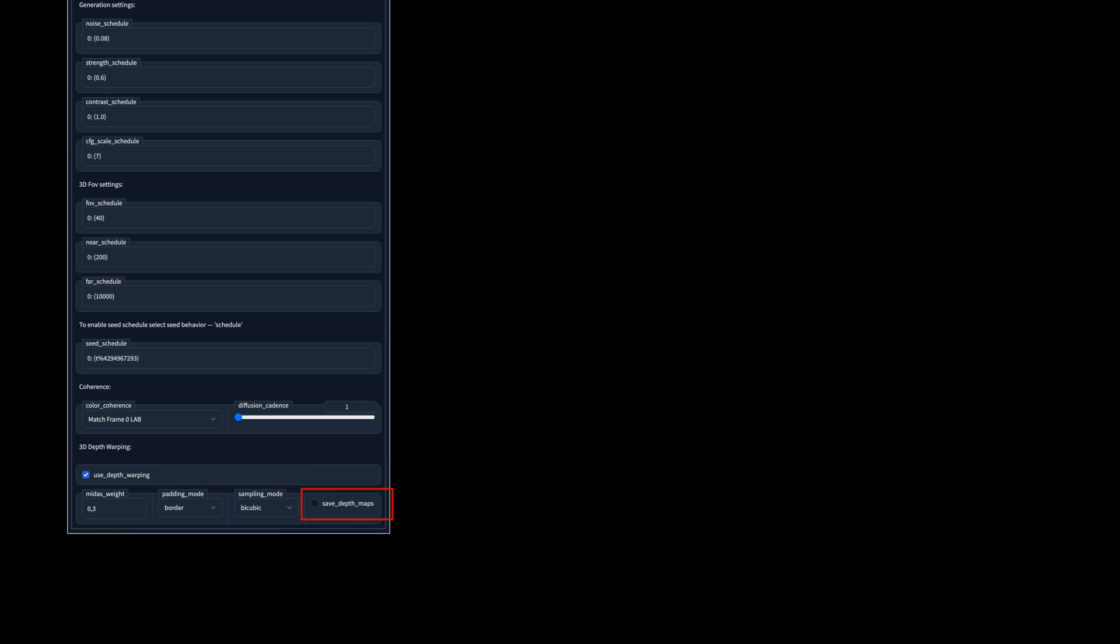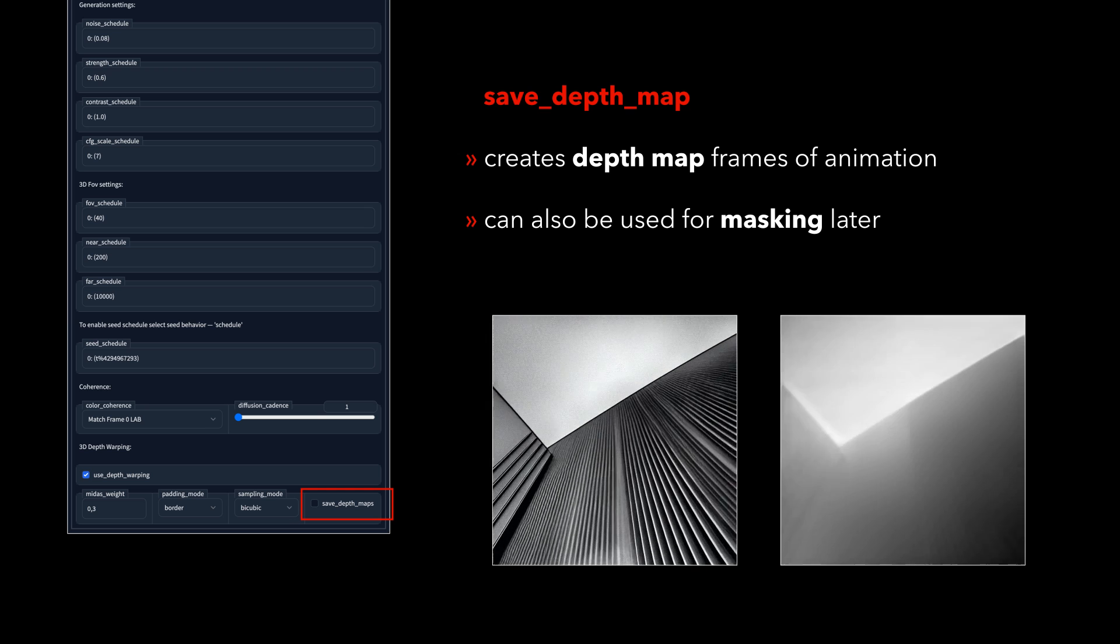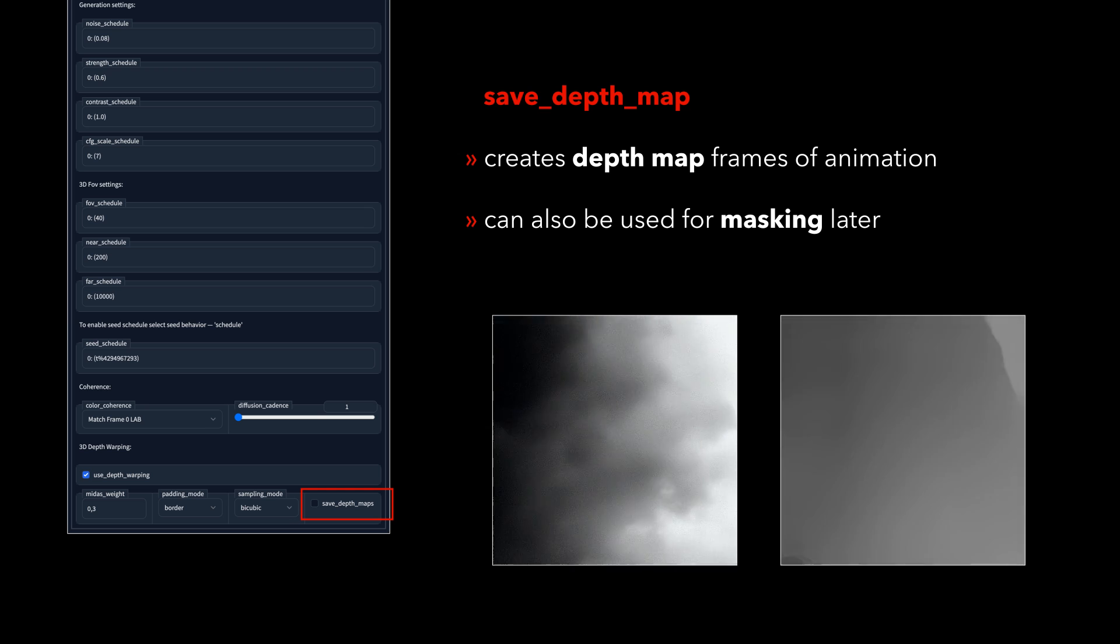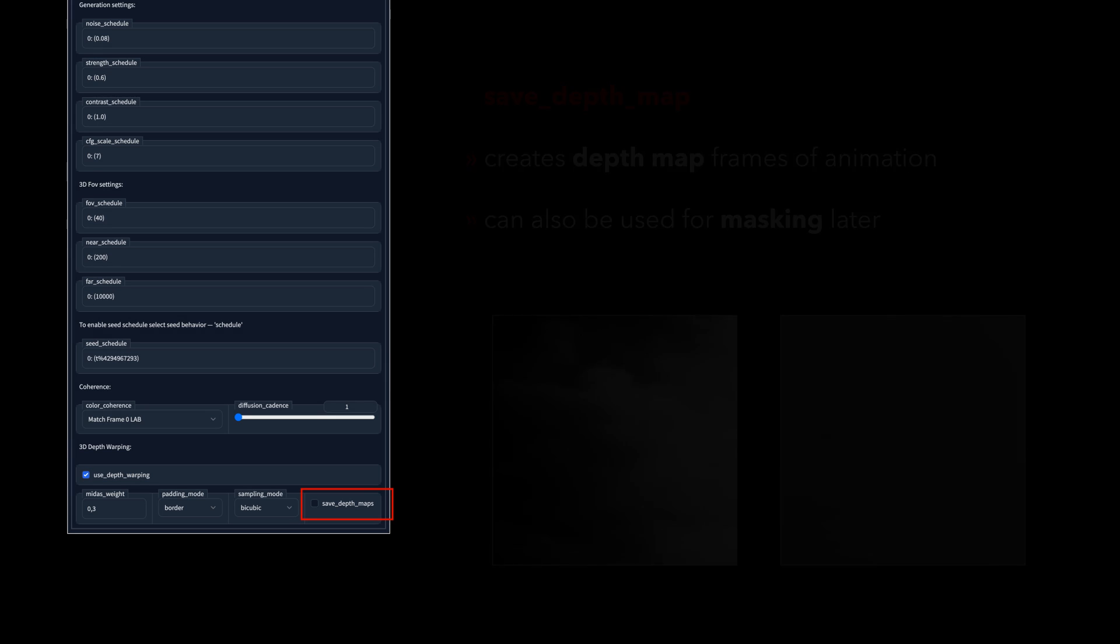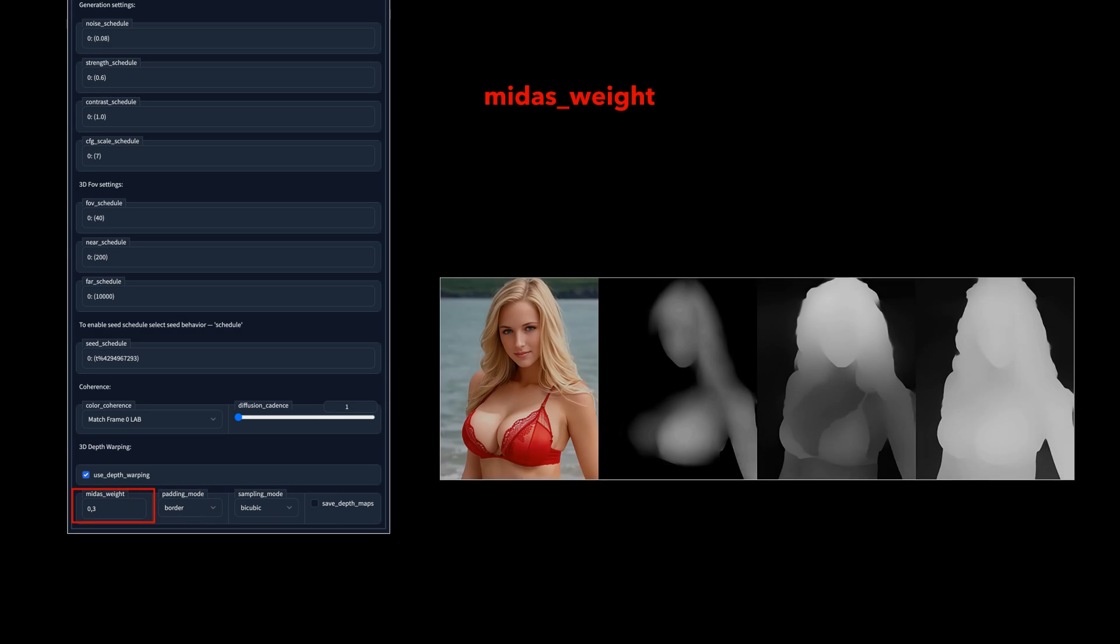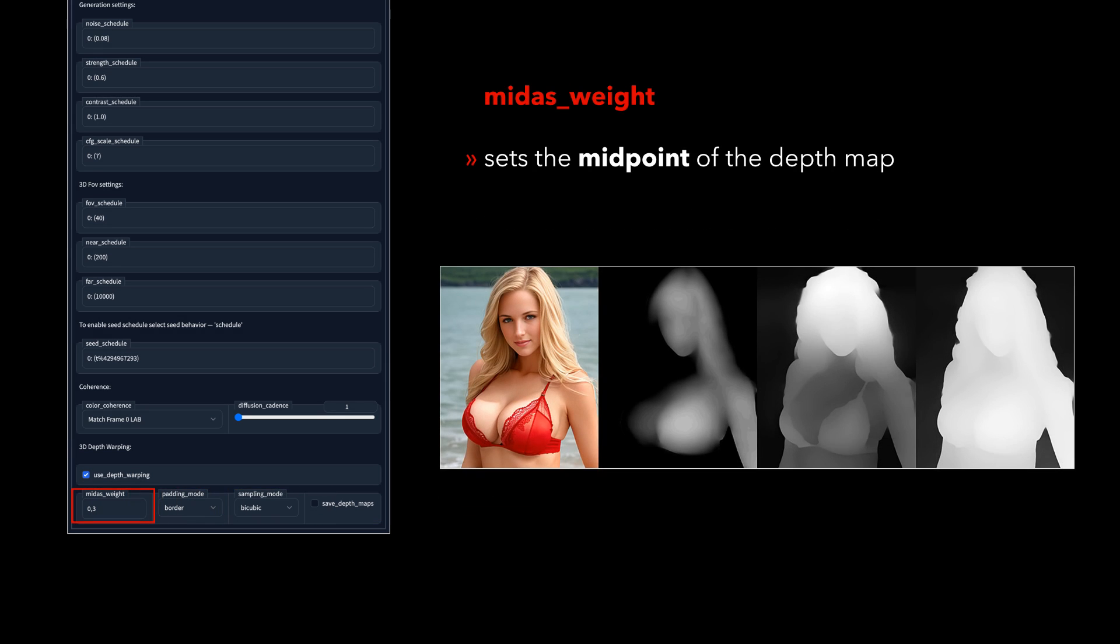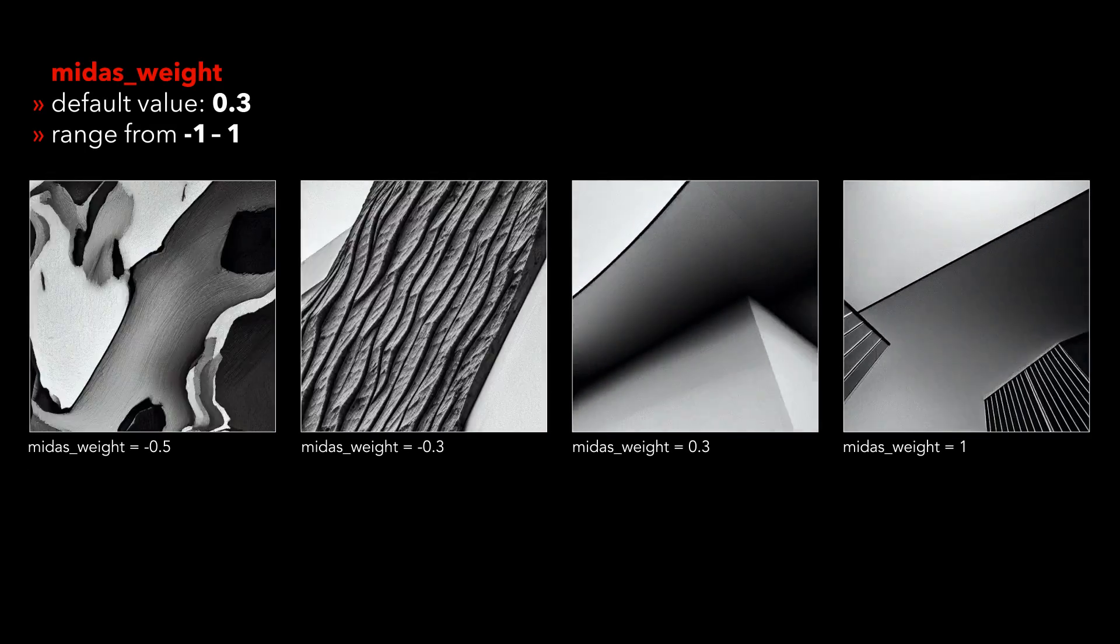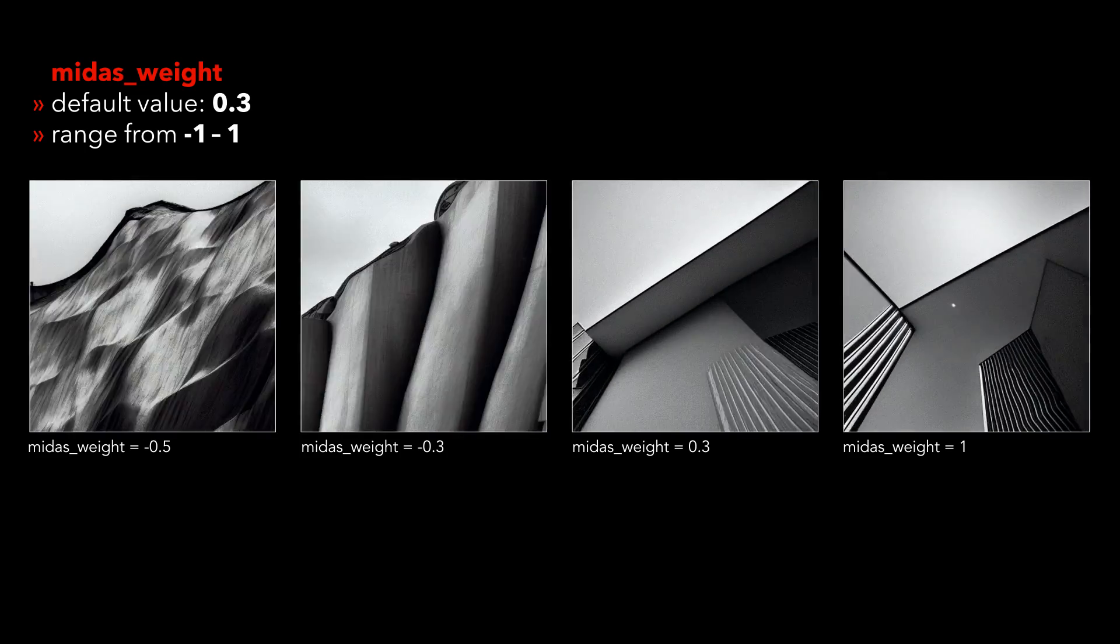Save Depth Map will create grayscale depth map images alongside your regular animation frames. Meet as weight sets a midpoint at which a depth map is to be drawn. A negative value will quickly result in chaotic image generations and artifacts, but might be interesting for experiments with a more artistic approach.